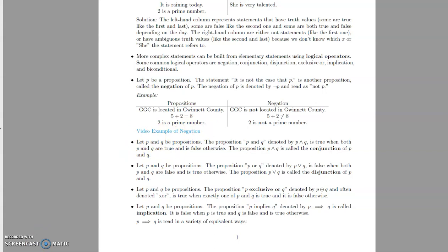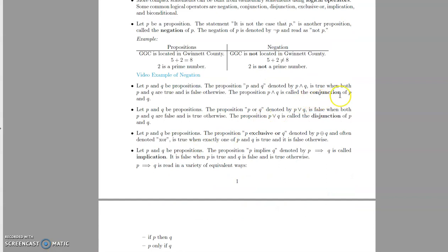The second type is called the conjunction. Starting with two propositions P and Q, the proposition 'P and Q,' denoted P with an upside-down V then Q, is the conjunction. It is only going to be true when both P and Q are true, and false otherwise. I'll talk more about what that means in the next video when we do truth tables.